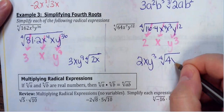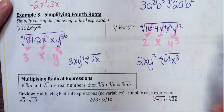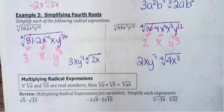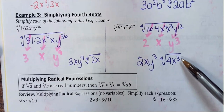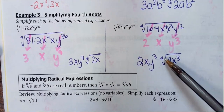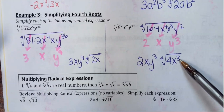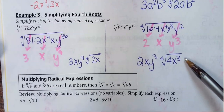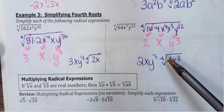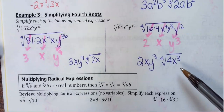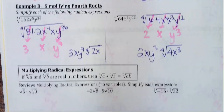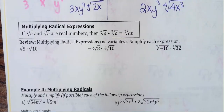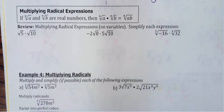A quick way to check: if your exponent is smaller than your root index, you're good — leave it alone. If your exponent on your variable is bigger than your root, then you need to break it down further.